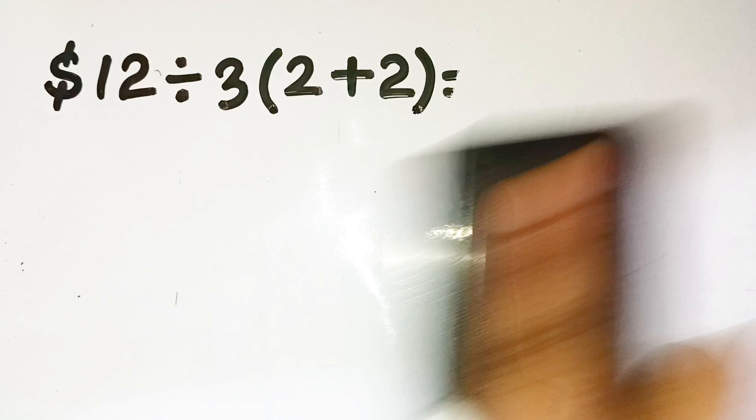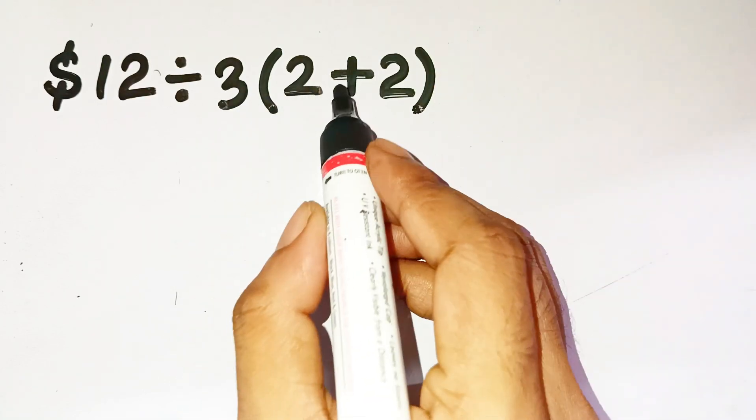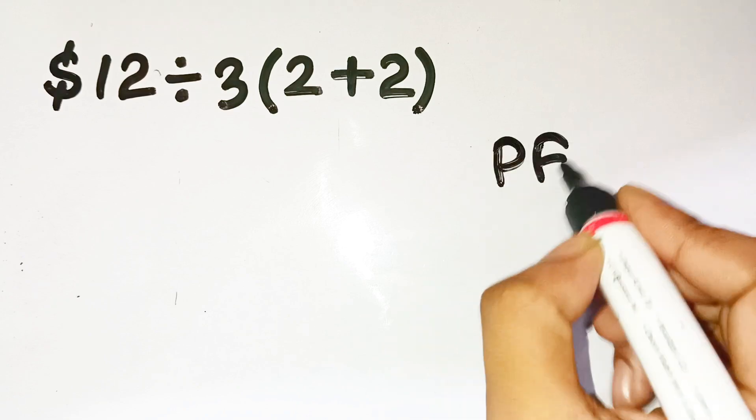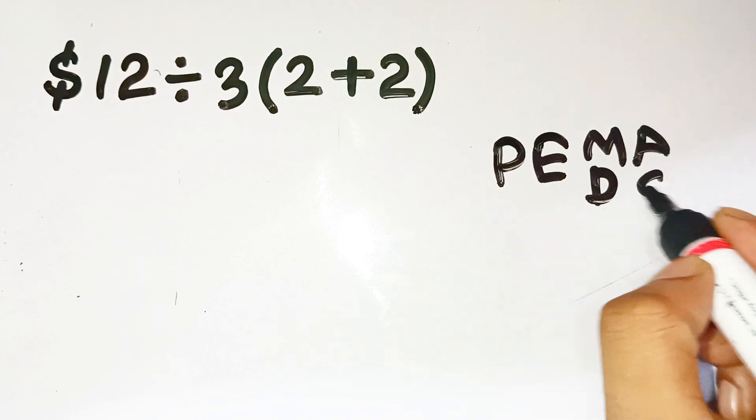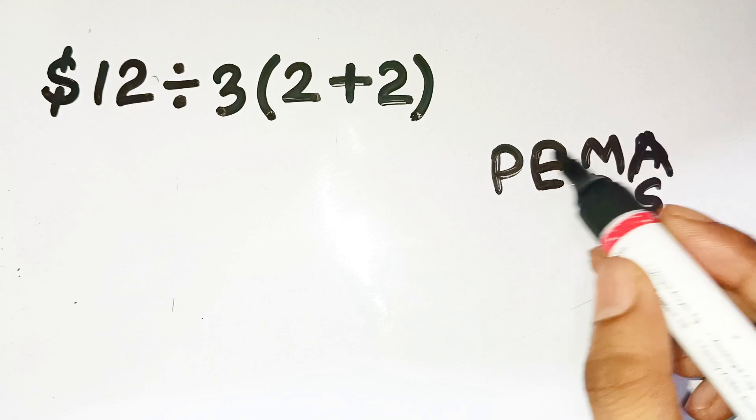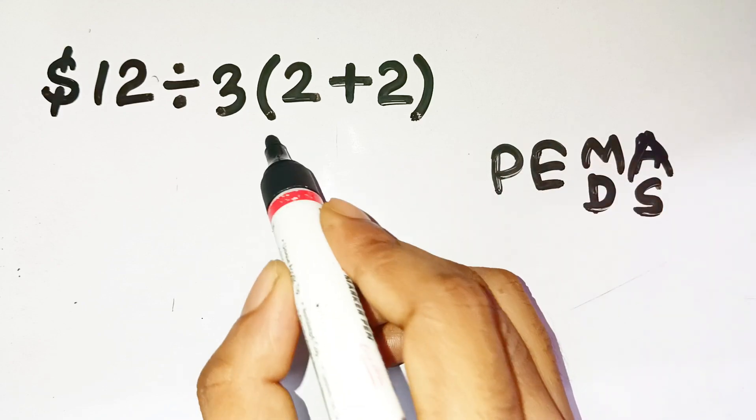This is $12 divided by 3, open parentheses, 2 plus 2, close parentheses. According to PEMDAS, which stands for parentheses, exponents, multiplication, division, addition, and subtraction, we always start with parentheses first. That's fine. So 2 plus 2 equals 4.